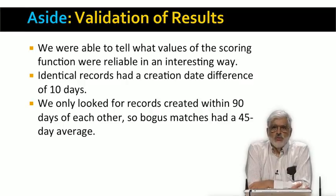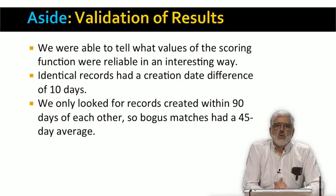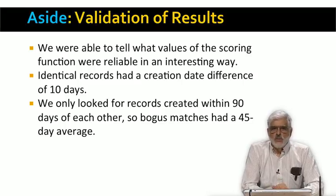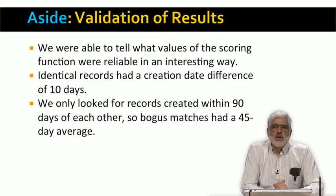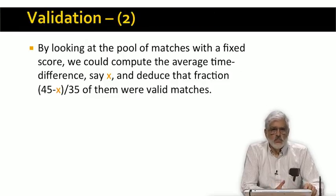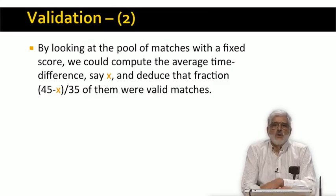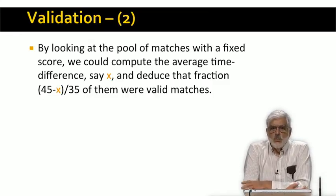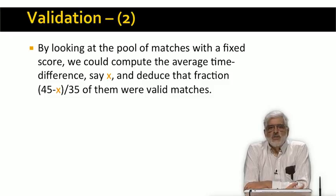In order to reduce further the pairs of records we needed to score, we only looked at pairs of records where the A record was created between 0 and 90 days before the B record. If you take a random A record and a random B record where the A record happens to have been created between 0 and 90 days before the B record, you'll get an average delay of 45 days. These records are almost certain to represent different people because they were chosen at random. So let's look at a pool of matches — say those with score 200. Some will be valid matches and their average difference in creation dates will be 10; others will be false matches and they will have an average difference in creation dates of 45.